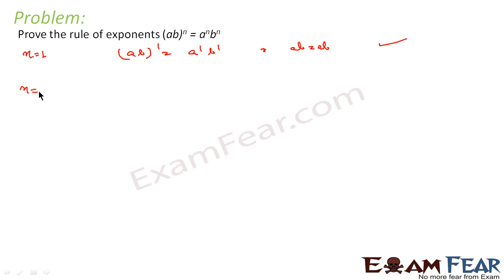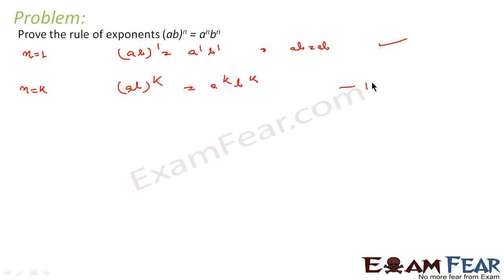Let's assume this is true for n equal to k. Then we have (ab) to the power k is equal to a to the power k times b to the power k. This is our equation 1.